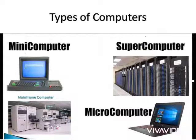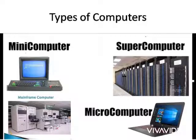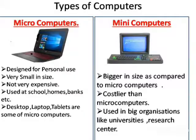The last topic of this chapter is the types of computer. As you can see in this image, we have four types of computer: micro computer, mini computer, mainframe computer, and super computer. First is the micro computer — these are the computers we use in our homes and schools, for example desktops, laptops, or tablets. The second is the mini computer, which is bigger in size compared to micro computers and is used in big organizations like universities and research centers.